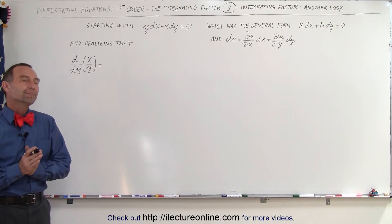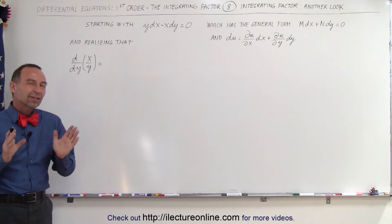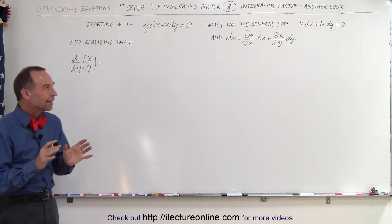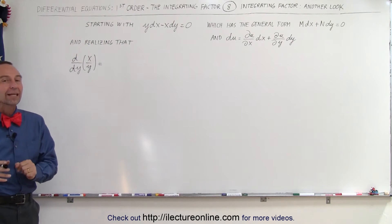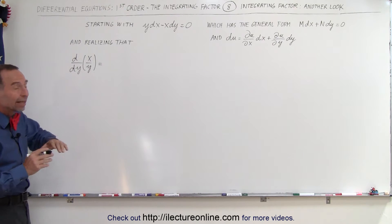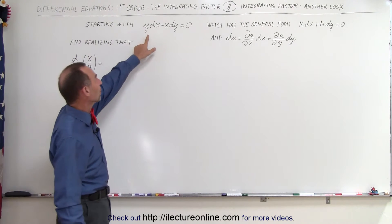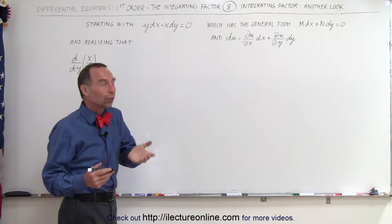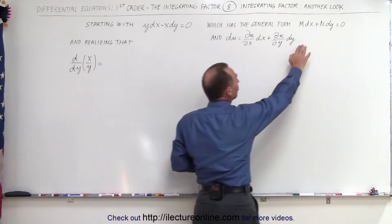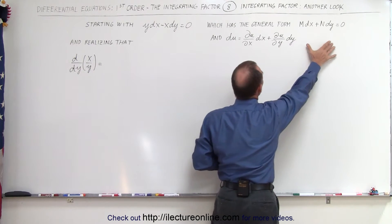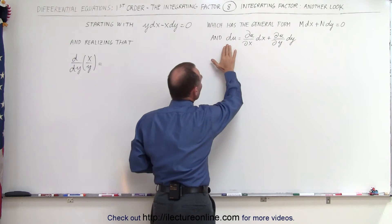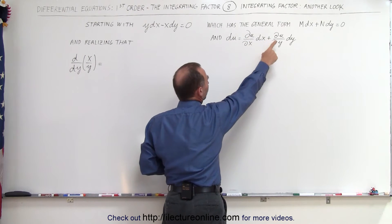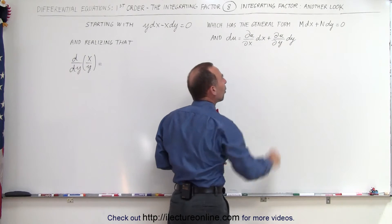Welcome to ElectronLine. Let's take another look at the integrating factor in a way that we hopefully get a little more understanding about what this really is. We start with the same differential equation y dx minus x dy equals 0, which has the general form m dx plus n dy equals 0, where we can also write du as the partial of u with respect to x times dx plus the partial of u with respect to y times dy.